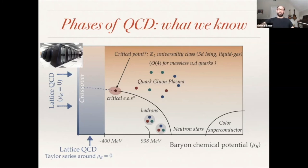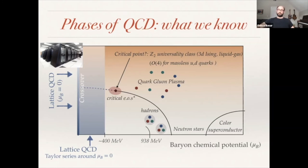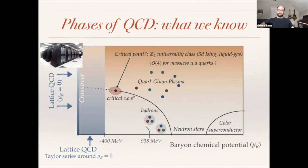We also know that if there is a critical point, it lies in the universality class of the 3D Ising model, which is the same universality class as the liquid-gas phase transition. This is based on the symmetries — or lack thereof — of QCD with massive quarks. From numerical studies of the 3D Ising model, we know what the critical equation of state is. For massless quarks, the universality class is different because of O(4) symmetry. We know to some extent the critical phenomena around the critical point if it exists. Regarding the critical point, that's so far all we know.